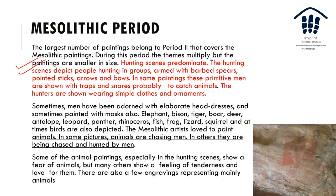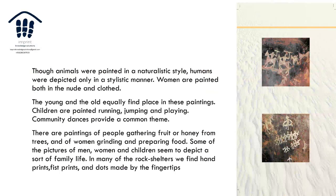In some Mesolithic paintings, primitive men are shown with traps and snares, probably to catch animals. The hunters are shown wearing simple clothes and ornaments, and sometimes elaborate headgear; some even have masks. The animals painted range from birds and squirrels to rhinos, panthers, leopards, and antelopes — the Mesolithic artist loved to paint animals. In some pictures animals are chasing men, and in others they are hunted by men. Some paintings show a fear of animals, while many others show tenderness and love for them.